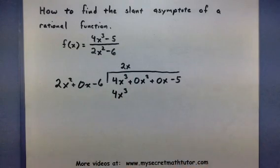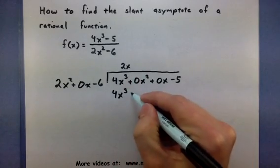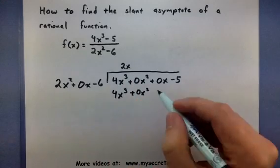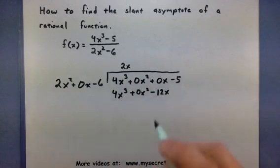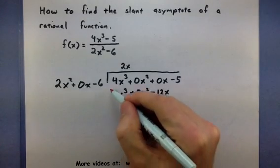Now we'll multiply by the other terms and subtract away that new polynomial down here. So 2x times 0 is 0x squared. 2x times minus 6 is minus 12x. Looks good. And now that we have that down there, we want to subtract it away.